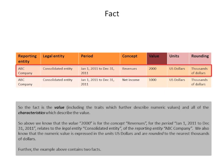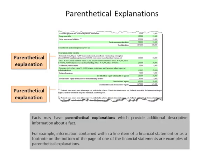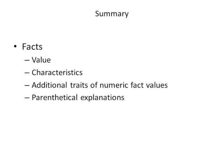Facts may also contain parenthetical explanations. Basically, information contained in the line item itself on the financial statement, as shown in this screenshot, or in the footnote at the bottom of the page, are examples of parenthetical explanations. So that's it — a fact has a value, characteristics, it may have additional traits for numeric fact values, and it may contain parenthetical explanations.